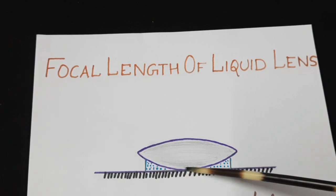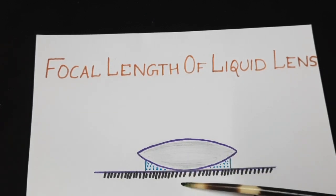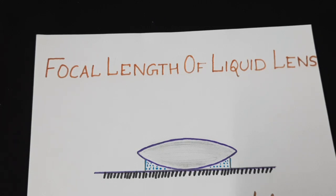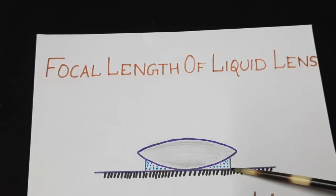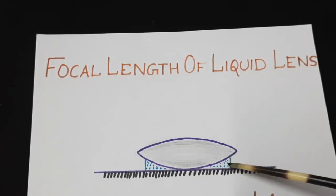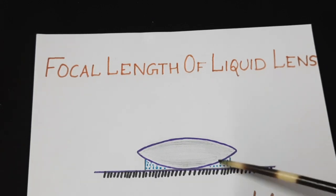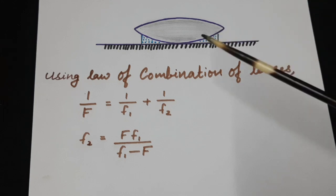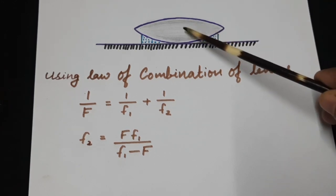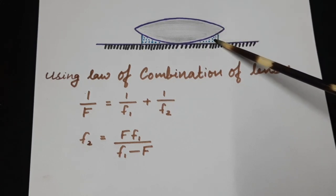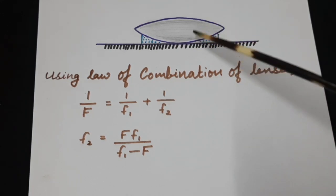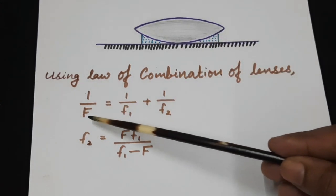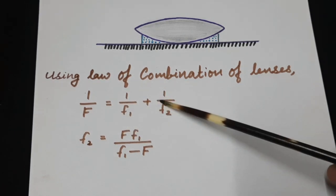If we introduce a layer of liquid between the lens and mirror, this setup is called the liquid lens arrangement. The shape of this liquid lens formed is a plane surface on one side and a concave surface on the other, making it a plano-concave lens of liquid. There are two lenses now: the convex glass lens and the plano-concave liquid lens. Using the law of combination of lenses, the effective focal length F satisfies 1/F = 1/F1 + 1/F2.